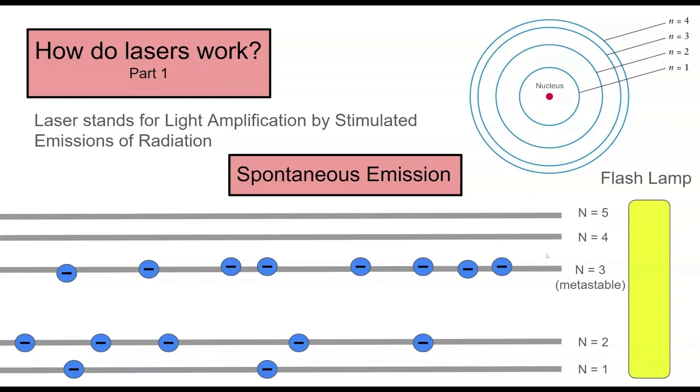Through probability, since this has a higher lifespan, eventually everything will fall here. Now, it may fall lower, but since our flash lamp is always supplying energy, it will go right back up, and we'll reach this important level, which is called population inversion. And this is when there are more electrons here on this higher level than below it. As you can see, there's five down here, eight on the N3 level, which is metastable.